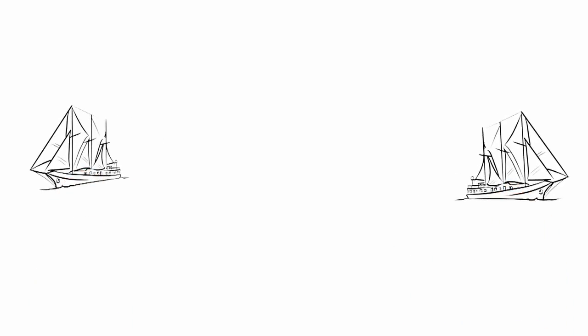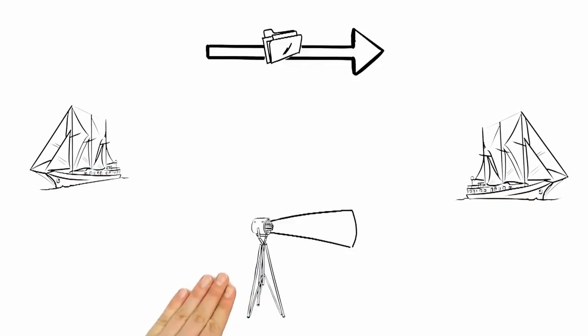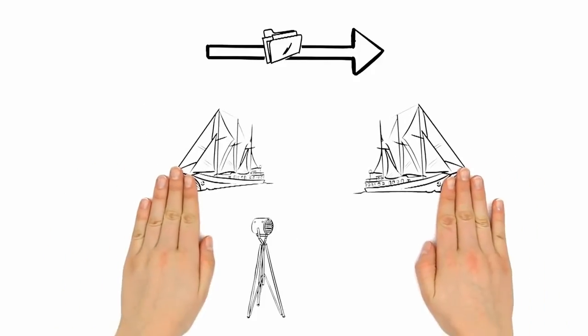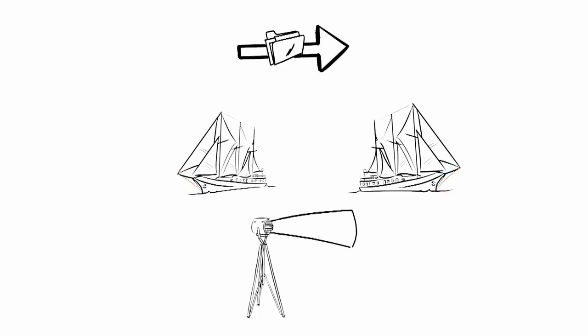Think of it as two ships at sea. The larger the distance between the ships, the slower the Morse code transmission. The shorter the distance, the faster the transmission.